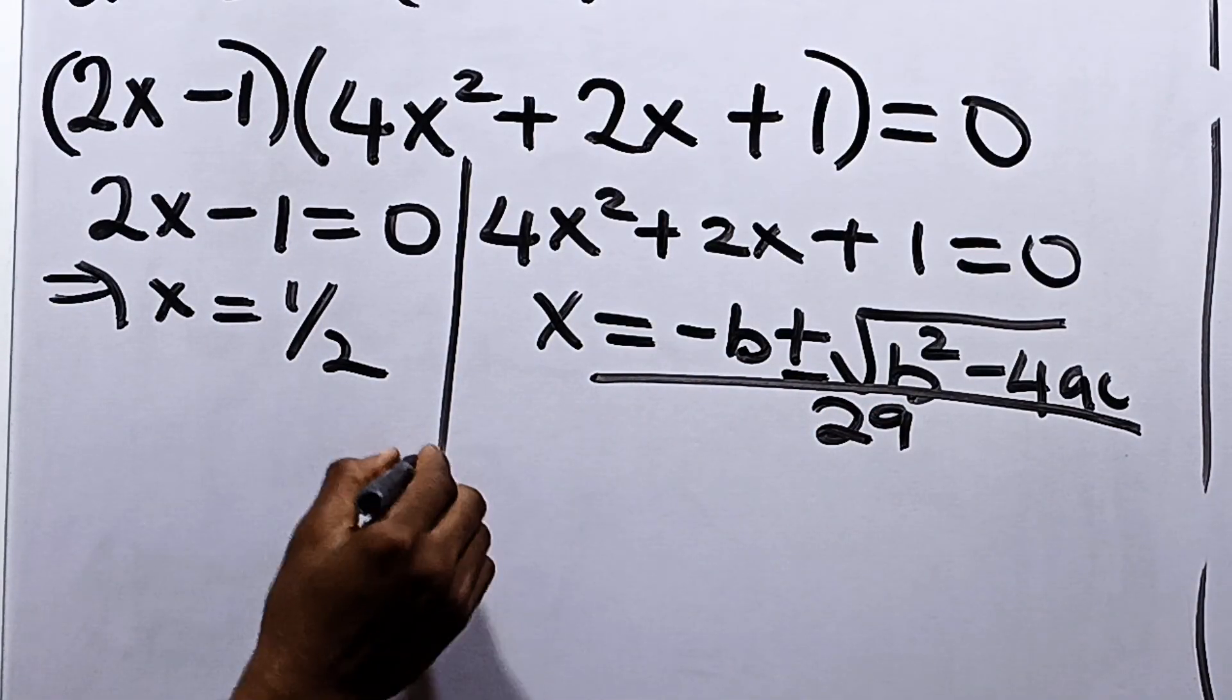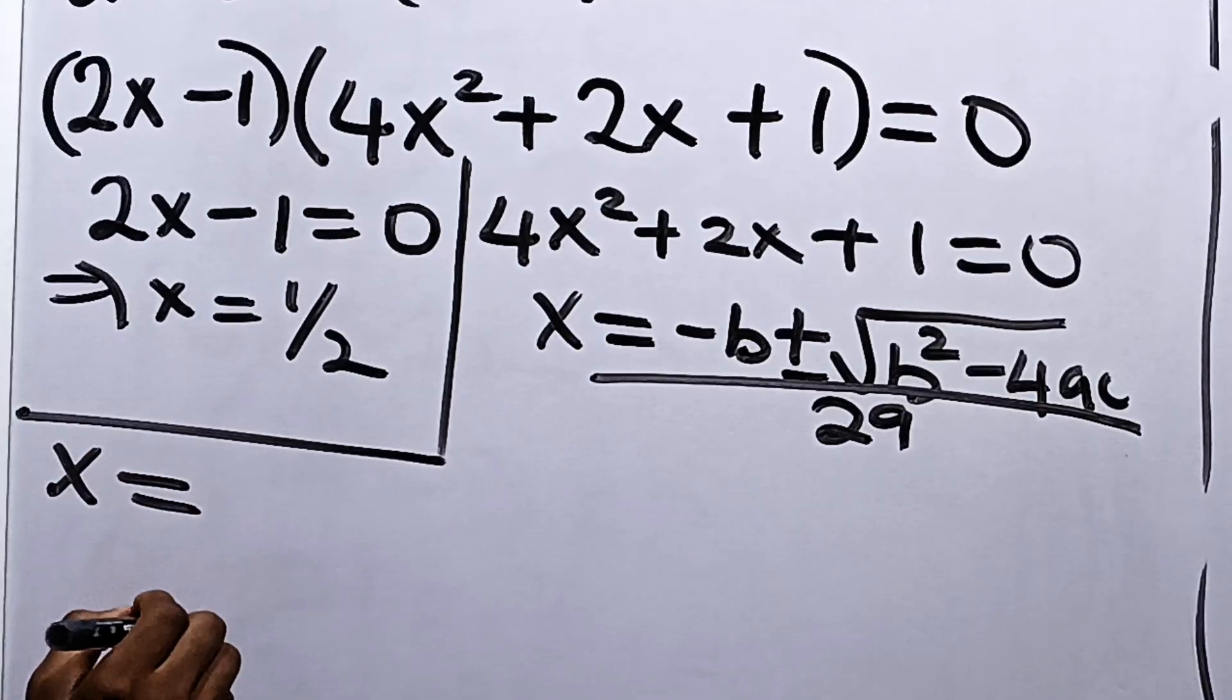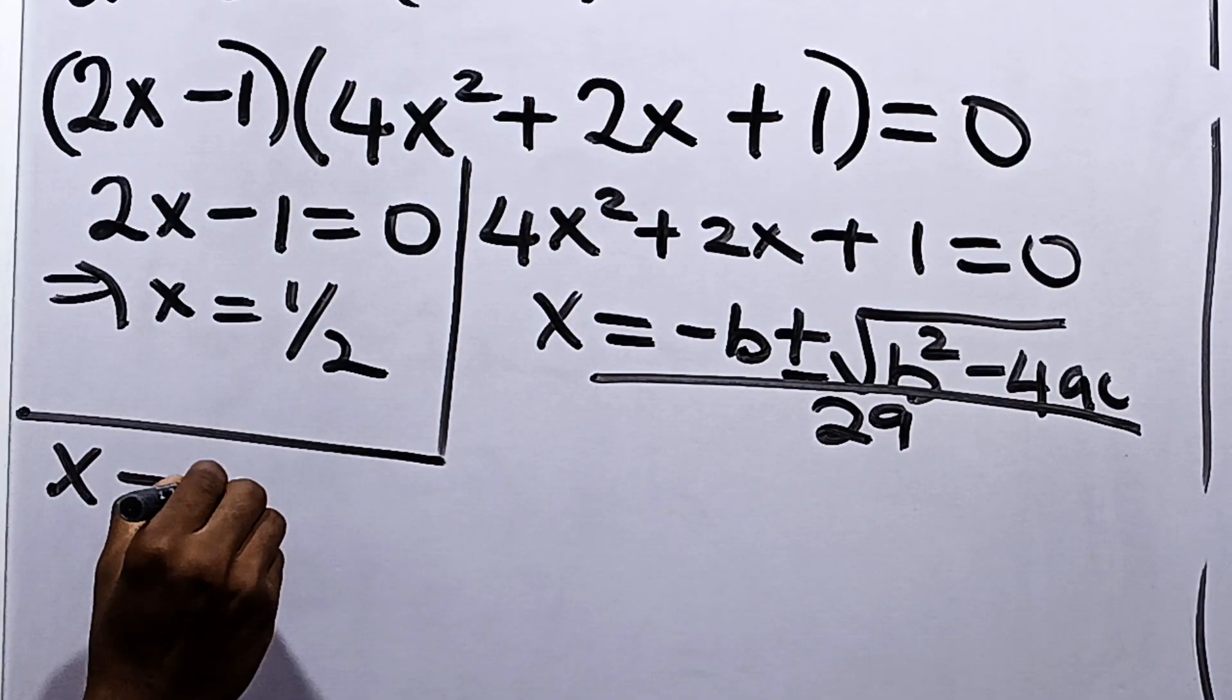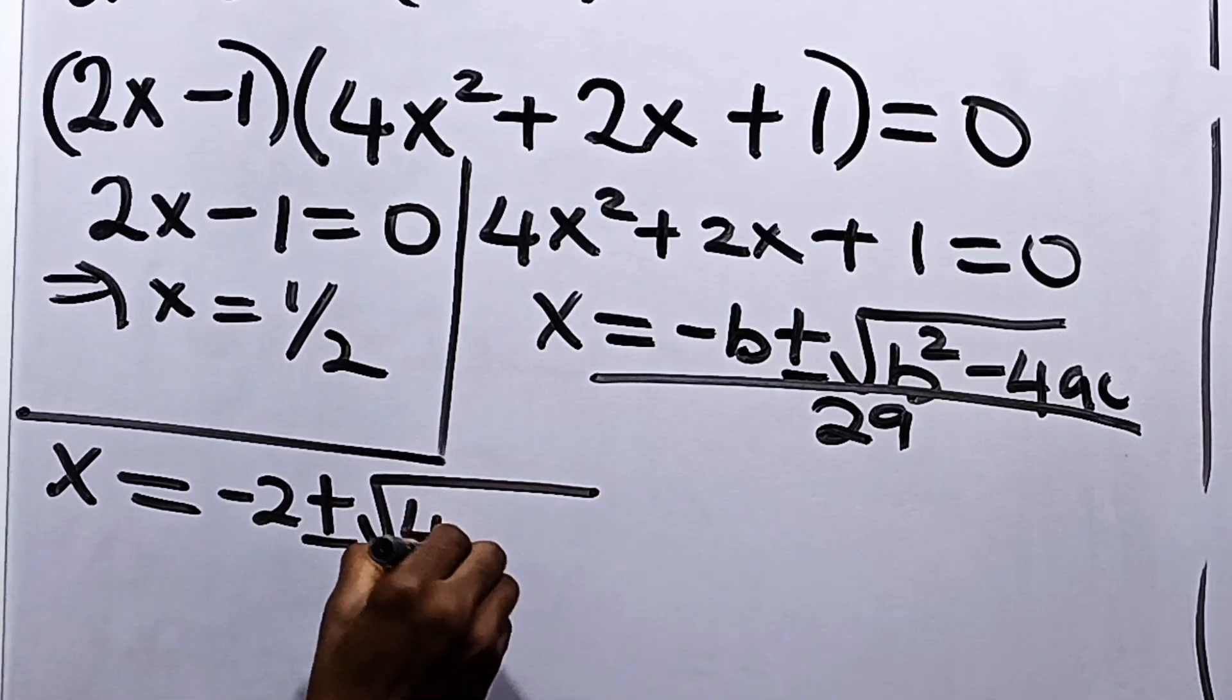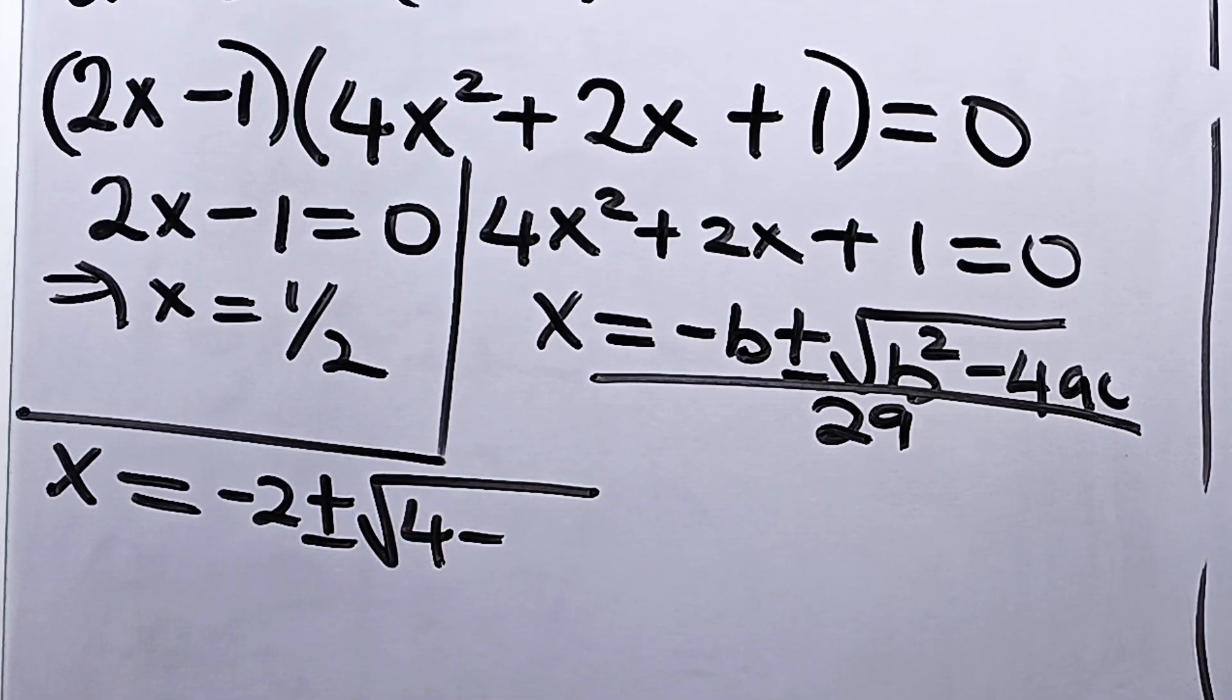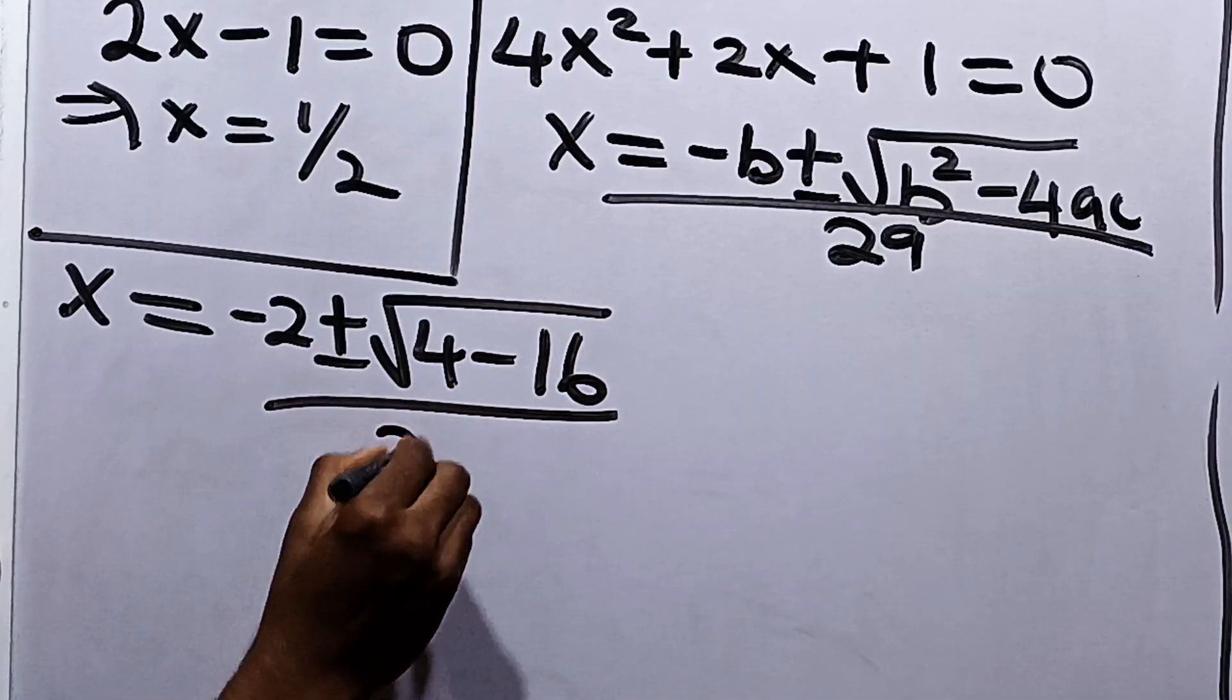Now, from here, we can now say that our x here becomes equal to minus b is minus 2, which is minus 2 plus or minus square root of 2 squared is 4 minus 4 times 4 times 1 is 16, all over 2 times 1, which is 2.